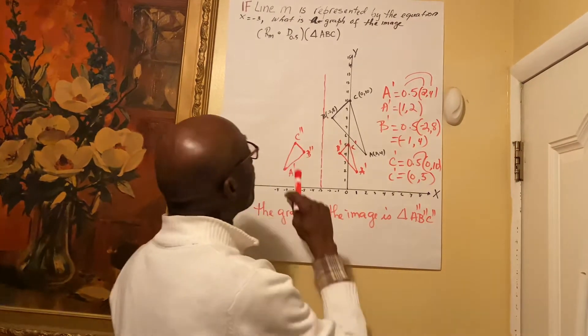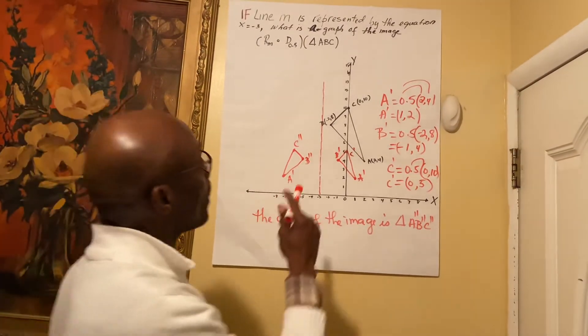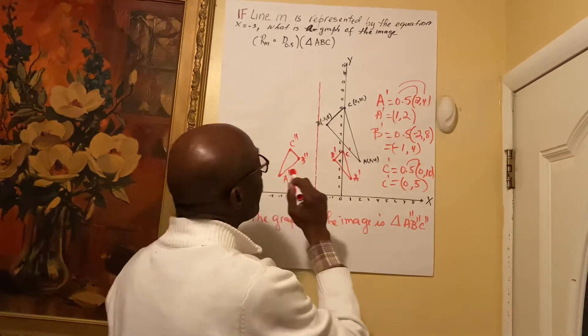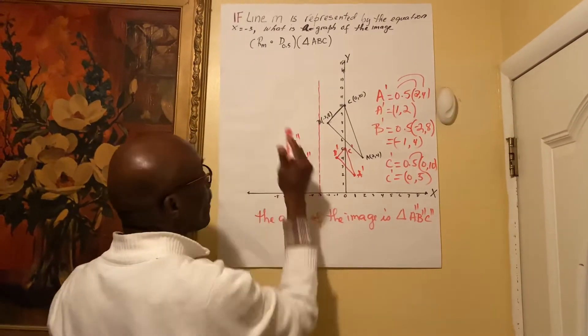Now, we're going to reflect triangle A'B'C' across the line x equals negative 3.